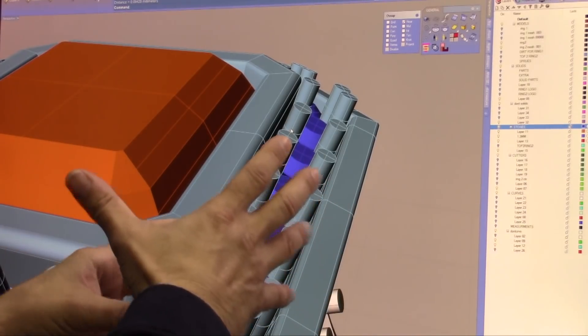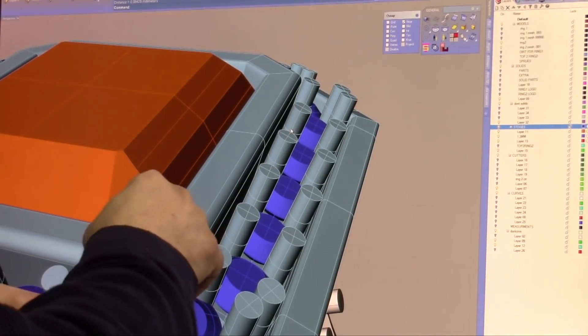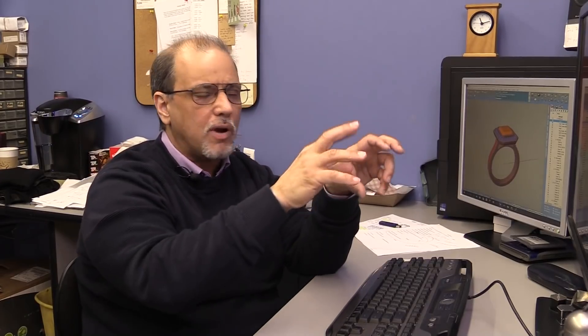What's going to happen when the investment goes in there and we de-wax the part in the investment, when we go to cast it, that part is going to be a sliver. It's going to break off and float around in there and cause porosity. So that means we have to go back, rebuild the part, and try casting it again. But the same problem is going to happen.